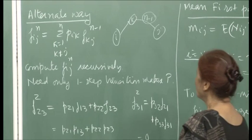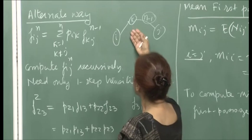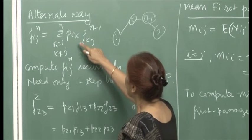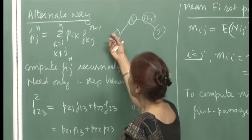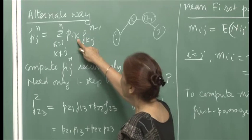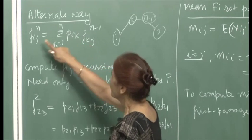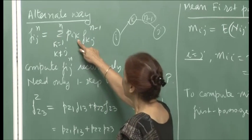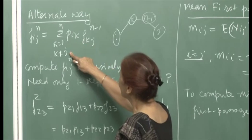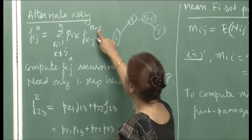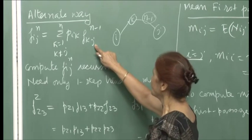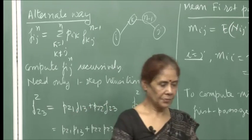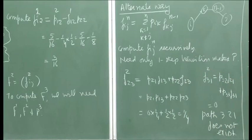The argument is that k should not be j, since we want to visit j for the first time. So in the first step I definitely go to some state k different from j, and then I need f_kj(n minus 1). This is a neater way of computing your first passage probabilities, and here we just need the one-step transition matrix p.